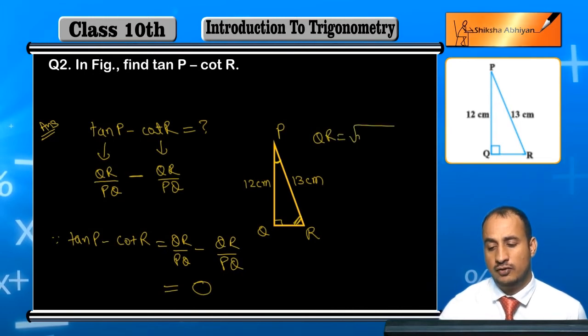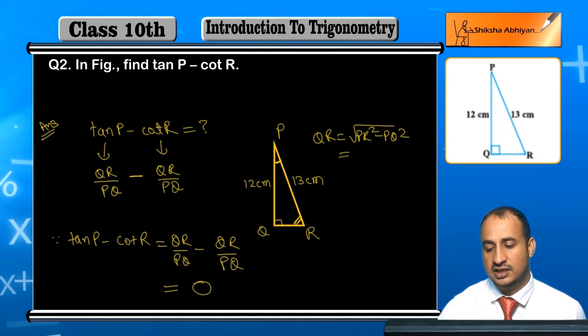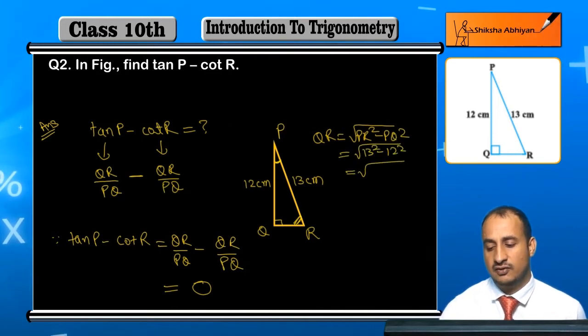QR value is what will happen? QR will be square root of PR square minus PQ square, square root of 13 square minus 12 square, 169 minus 144, and that is square root of 25, this is 5.